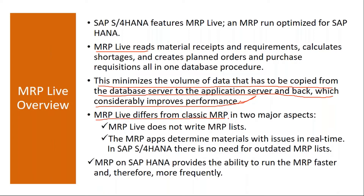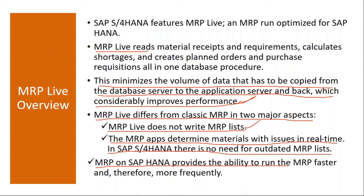MRP Live differs from classic MRP in two major aspects. First, MRP Live doesn't write MRP lists — there are no MRP lists here. The MRP apps determine materials with issues in real time, and in S4 HANA there is no need for outdated MRP lists. Due to this, MRP on S4 HANA provides the ability to run MRP faster and therefore more frequently — you can run MRP Live whenever you want, not just as a background job.